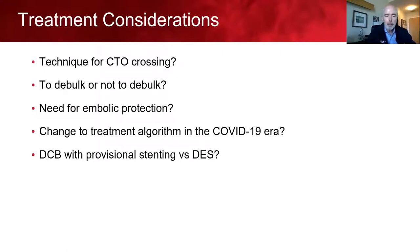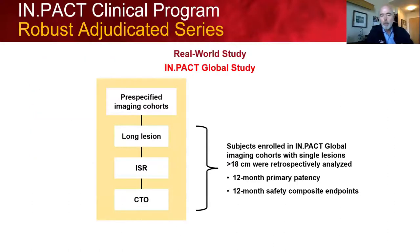Key treatment considerations discussed: technique for crossing the CTO — standard guidewire versus dedicated CTO device; whether to use a debulking device; whether to use embolic protection; and in the COVID-19 era, whether to simplify and speed up the procedure to minimize hospital exposure. Also germane: should DCB with provisional stenting be used — looking at the data Gary presented — or drug-eluting stents upfront? Gary's data supports that stenting is not a downside in a case like this.